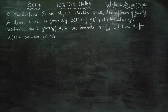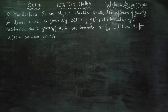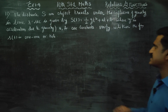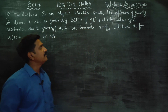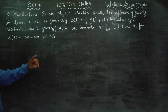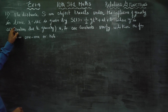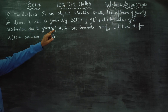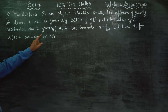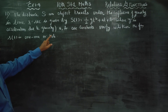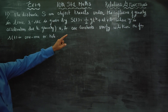Dear 10th standard students, in exercise number 1.4, sum number 11, the distance s of an object travels under the influence of gravity in time t seconds is given by, where g is the acceleration due to gravity. A and b are constants.